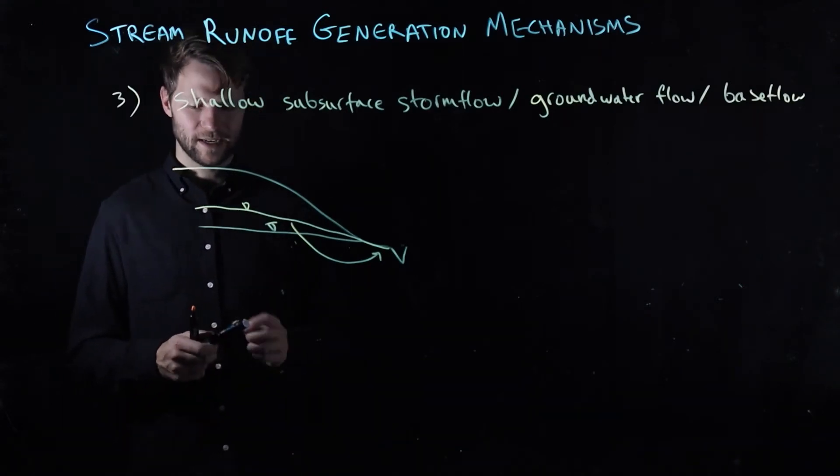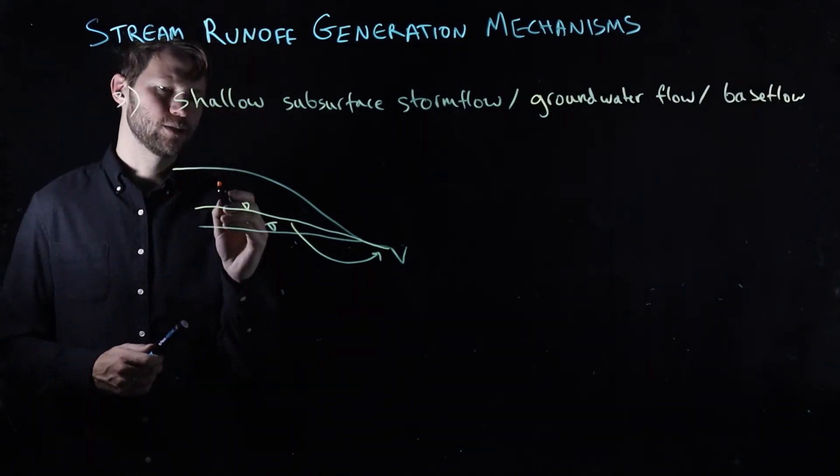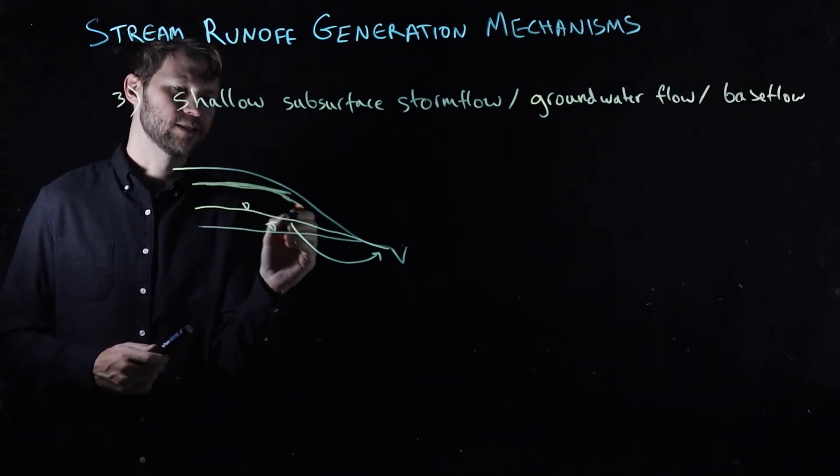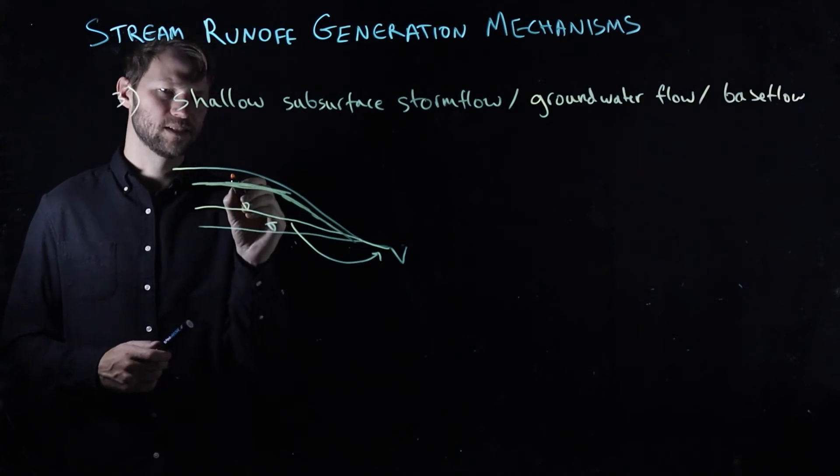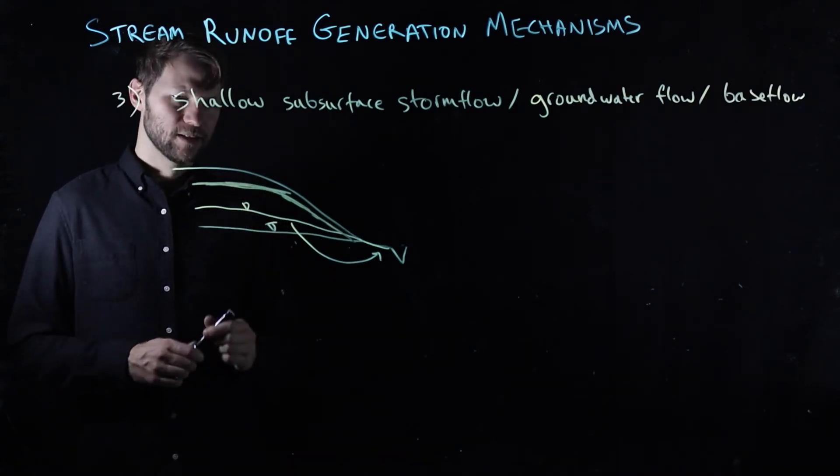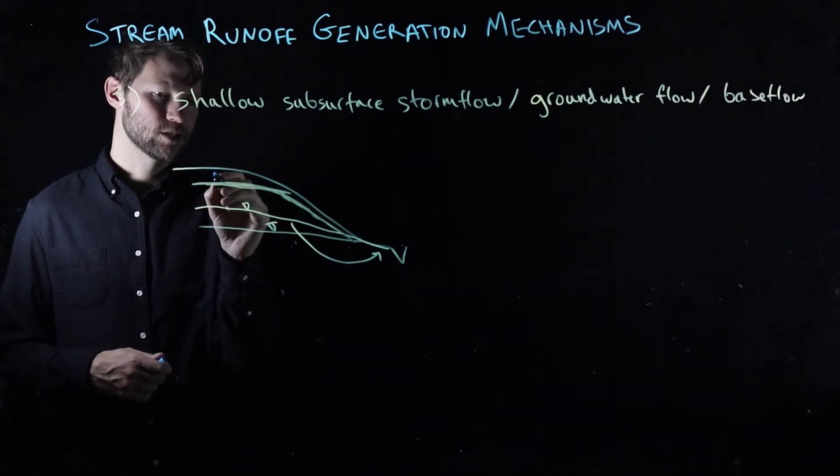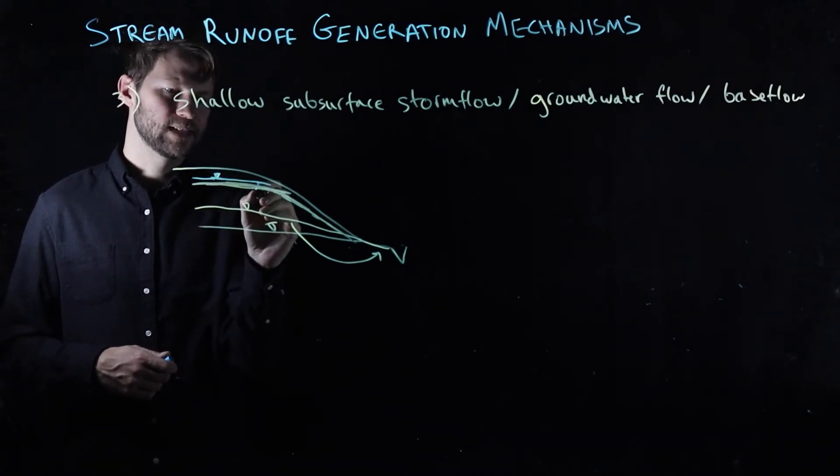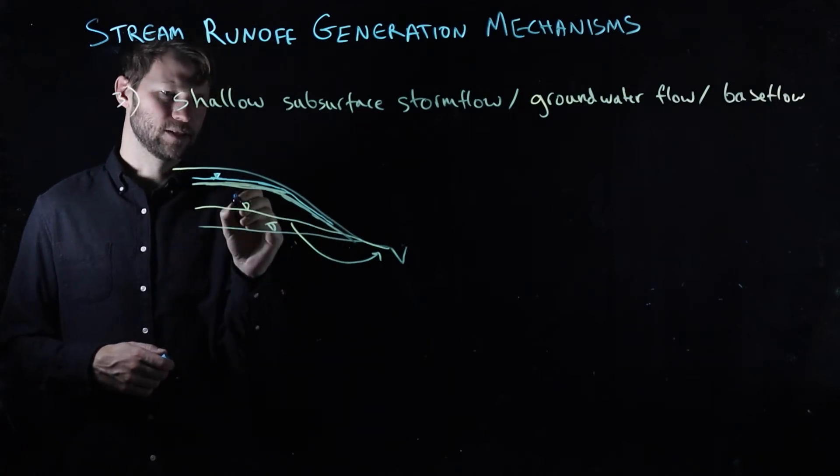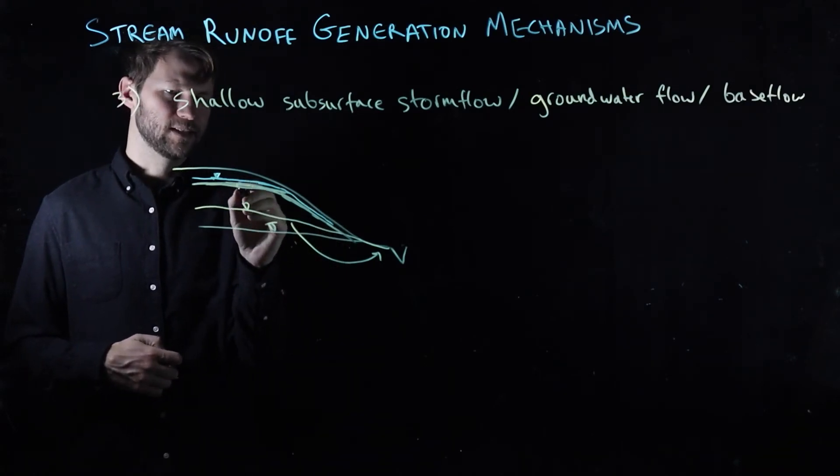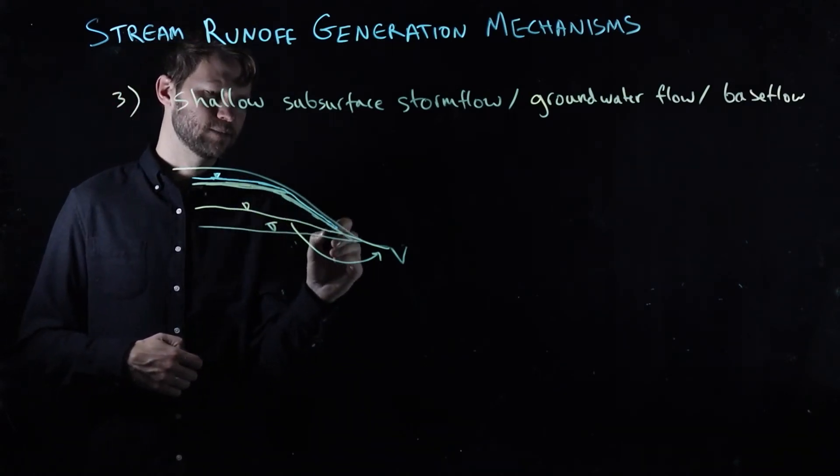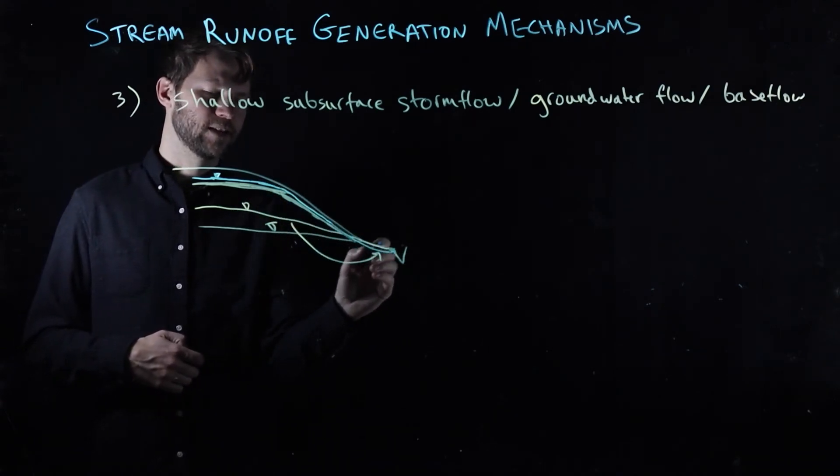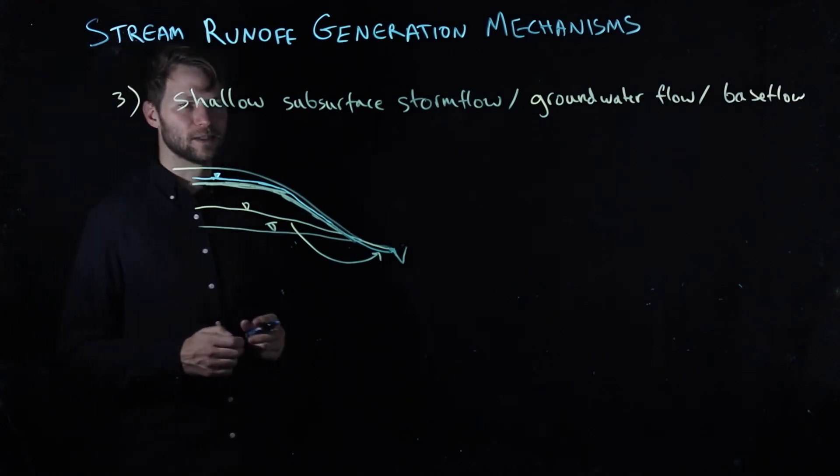You may also get a scenario in which you have a layer of decreased hydraulic conductivity. Perhaps this is the soil-bedrock boundary. And you may even get a perched water table that gets set up on this particular boundary. It's still in the subsurface, and it's still flowing as subsurface flow, as saturated zone flow, down to the channel where it's generating stream flow. It's just another example of subsurface storm flow.